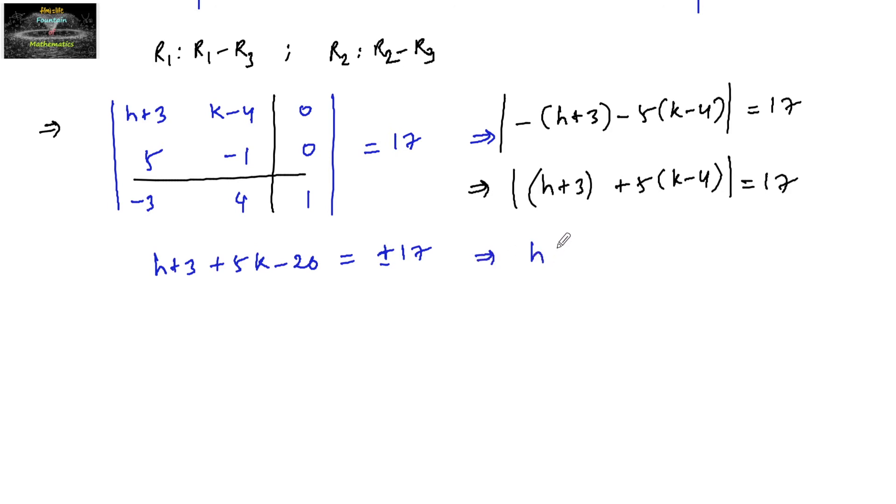So here, H plus 5K, so this is minus 17, minus 17, is equal to plus or minus 17, plus 17. So 3 minus 20, minus 17, will go here, plus 17.